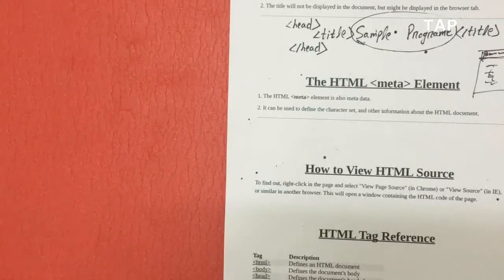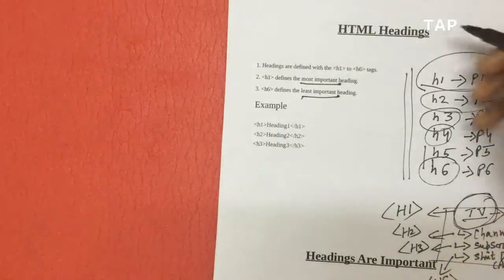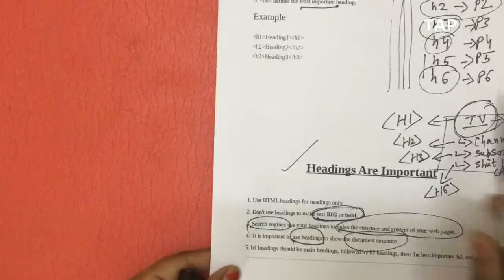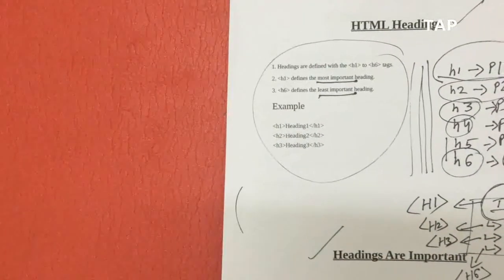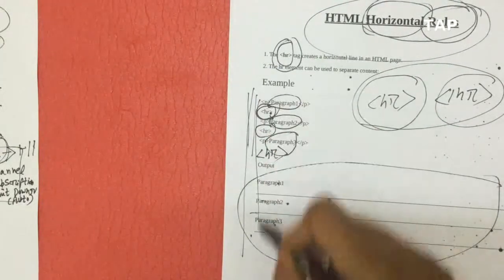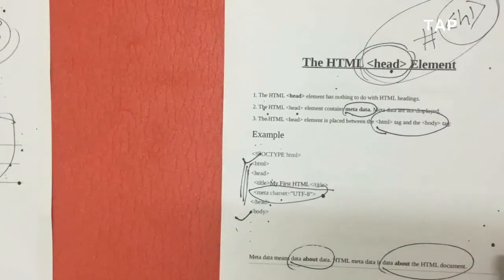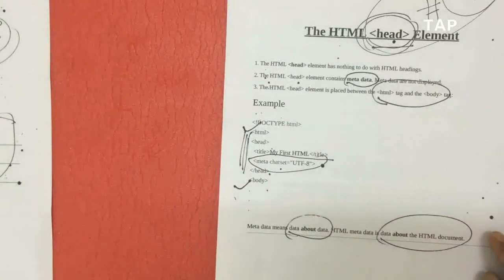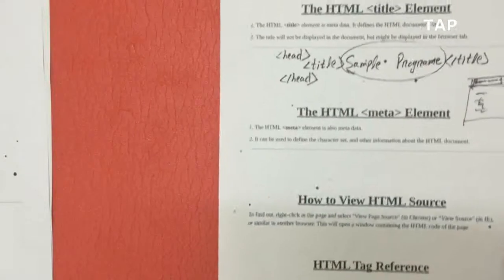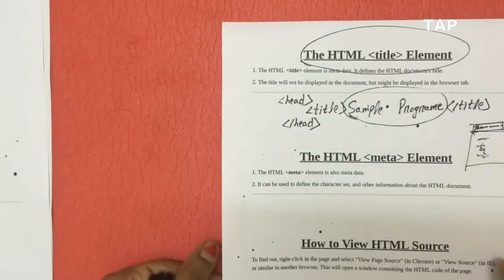So today I have told you about HTML headings, how these headings are important, and the types of headings. Next I told you about the HR tag with one example. I also differentiated the head tag from the heading tag, gave you a brief idea about metadata, and we also learned about the title tag of HTML.